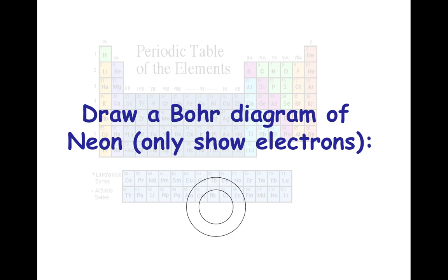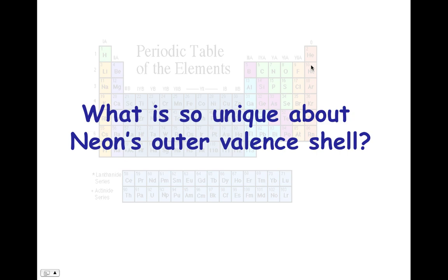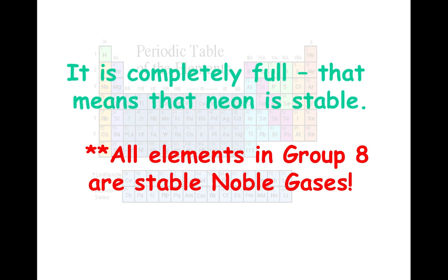How about a Bohr diagram of neon? We're only going to show the electrons. Fill up my first valence shell with 2. Neon, having an atomic number of 10, means that it's going to have 8 left over, and that's going to fill up my outer valence shell. Neon is also in group 8, which tells me that that outer valence shell is going to be full with 8. The inner shell thus must be full because you can't start filling up the second shell until you fill up the first shell. Neon's pretty unique because there's something pretty special about its outer valence shell. It's completely full, and that means that neon is very stable.